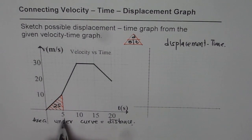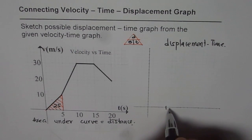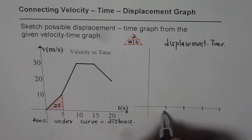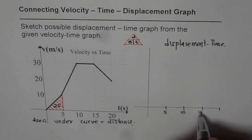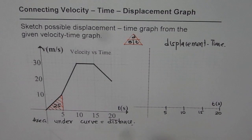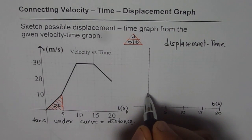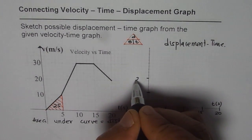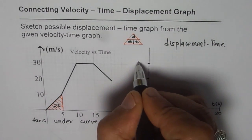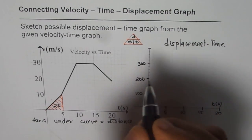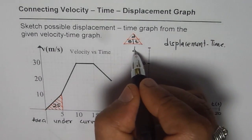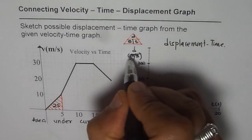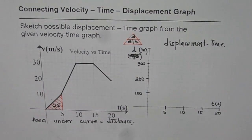Let us make an appropriate scale and draw the displacement-time graph. We will use the same units for time: 5, 10, 15, and 20 seconds. For displacement, each division represents 100 meters, so the scale goes up to 400 meters. Displacement is in meters and time is in seconds.